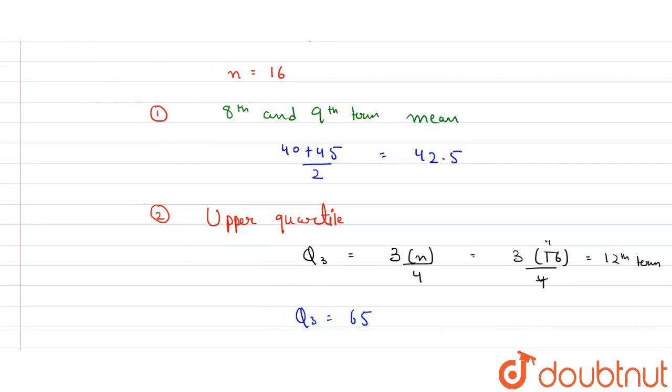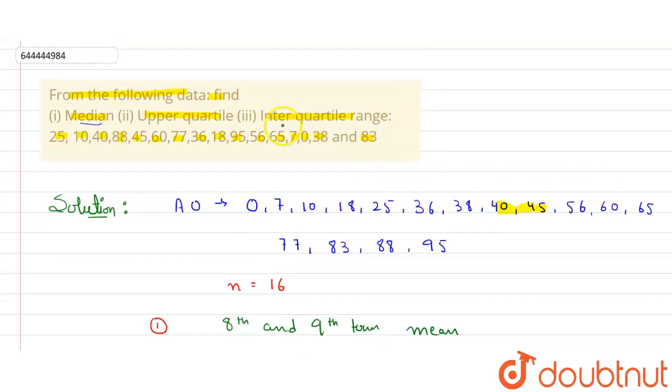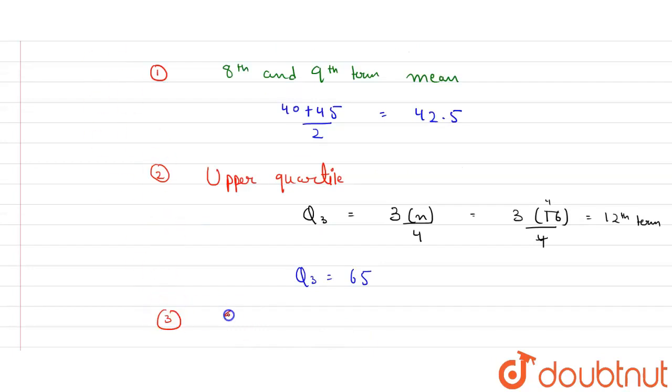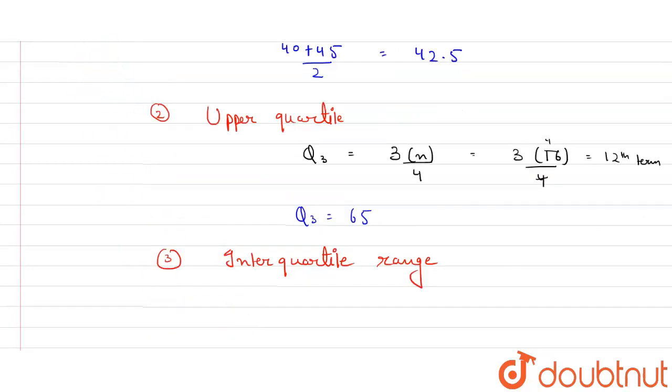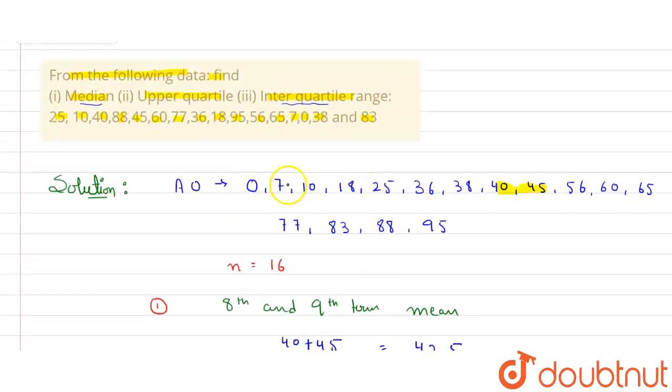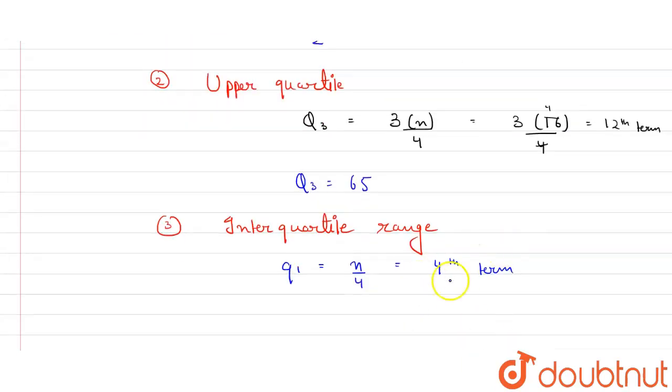Now what we need to find next is interquartile, and for finding interquartile we need lower quartile also. So let me write here third part: interquartile range. As I said, we need to find lower quartile also. Lower quartile Q1 is given by n/4. So n is 16 divided by 4, that is 4. So fourth term: look, fourth term in the series is 1, 2, 3, fourth term is 18. So value of Q1 is 18.